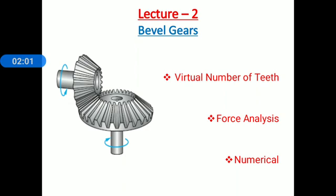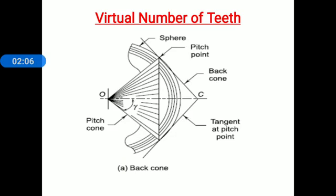Now moving toward the virtual number of teeth. The analysis for bevel gears shows that the true section of involute profile of the tooth lies on the surface of a sphere. It is not possible to represent on a plain surface the exact profile of a bevel gear tooth that actually lies on the surface of the sphere. The beam strength and wear strength equations are based on tooth profile, so it is necessary to approximate the tooth profile as accurately as possible. This approximation is called Tregold's approximation.